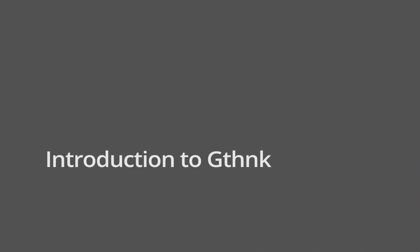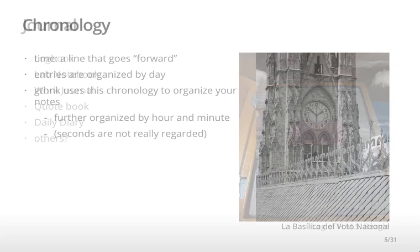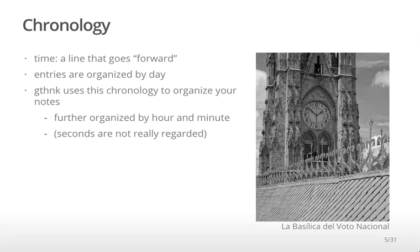Introduction to GThink. GThink is software for managing a journal. A journal could be a logbook, a laboratory notebook, a work journal, a quote book, a daily diary, or pretty much whatever you could imagine. The main characteristic for the journals that GThink manages is the chronology — the use of time to organize all of the entries within the journal. In GThink, entries are organized by day, and further organized by the hour and the minute — the time when the entry was created.